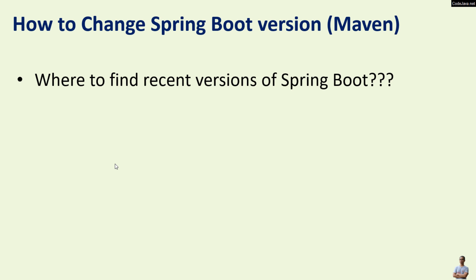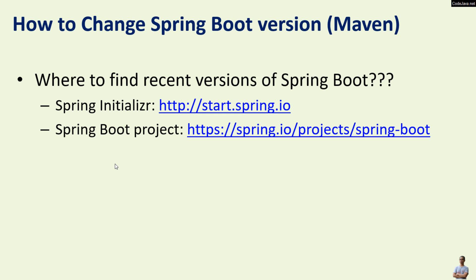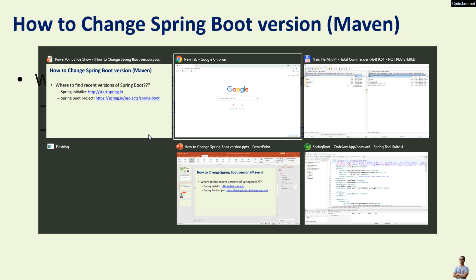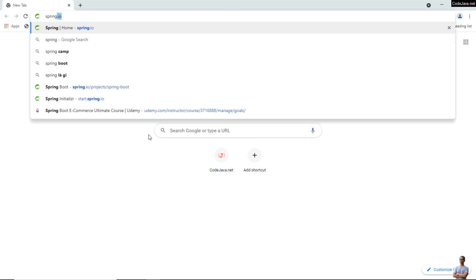You can find the recent versions of Spring Boot on the Spring Initializer website at start.spring.io, or on the Spring Boot project home page at spring.io/projects/spring-boot. Let me go to the home page of the Spring Boot project.